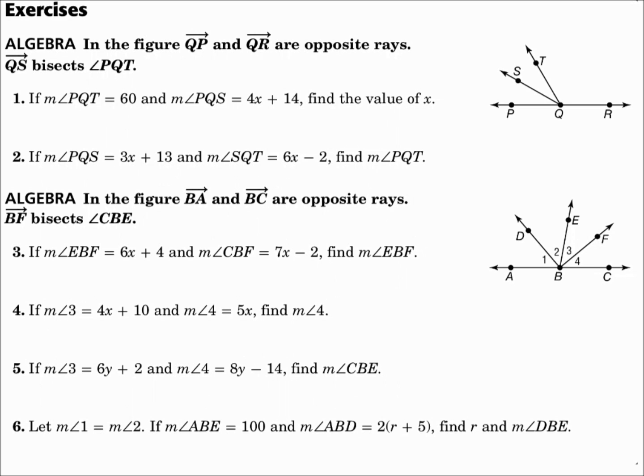In the figure, ray QP and ray QR are opposite rays, so they form a line. Ray QS bisects angle PQT, so it cuts it in half. Number one: if the measure of angle PQT equals 60, and the measure of angle PQS equals 4X plus 14, find the value of X.